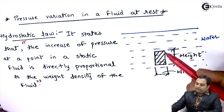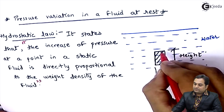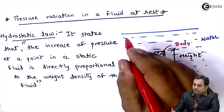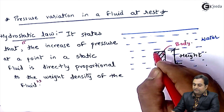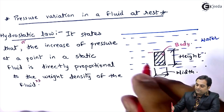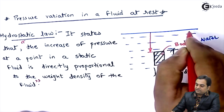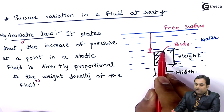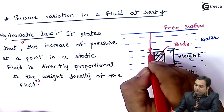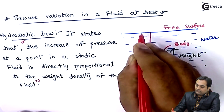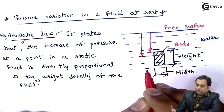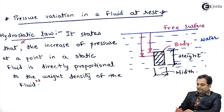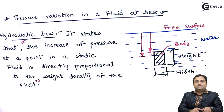This means if we want to find out how much pressure is acting on this body along the depth — if we go deep into this water and reach this element at some height from the free surface — as we go deeper, the pressure intensity is directly proportional to the weight density of the fluid.